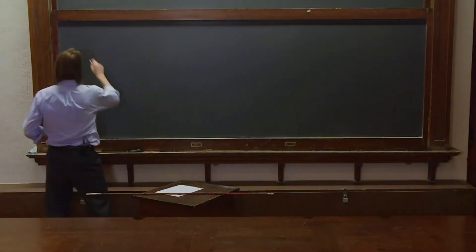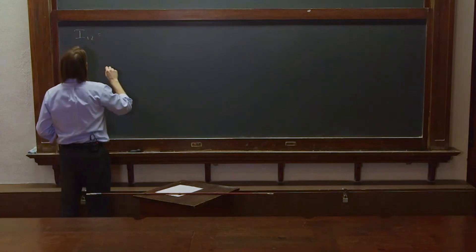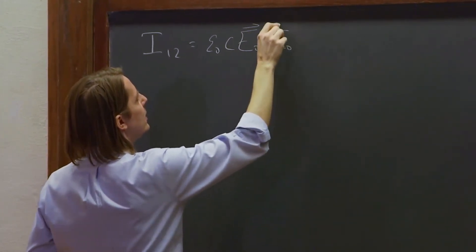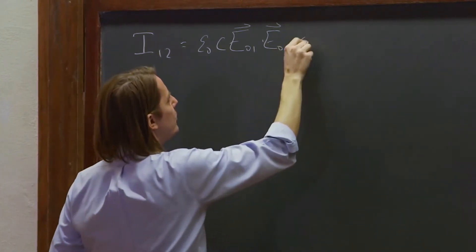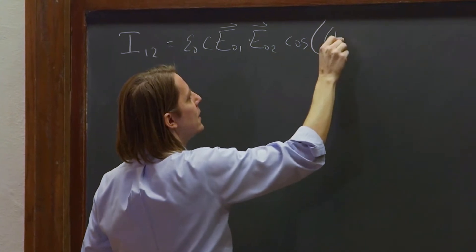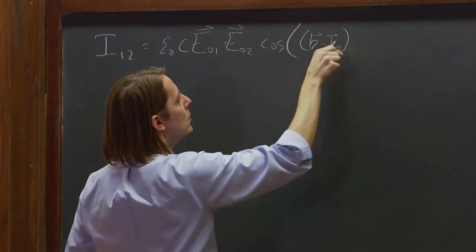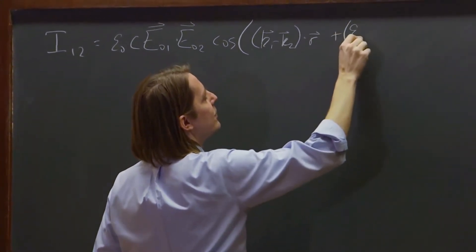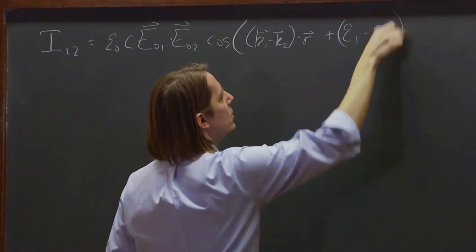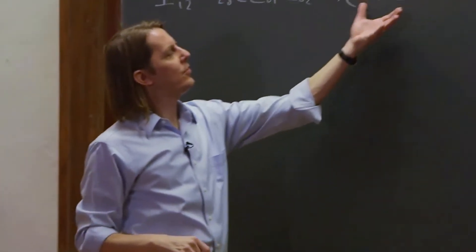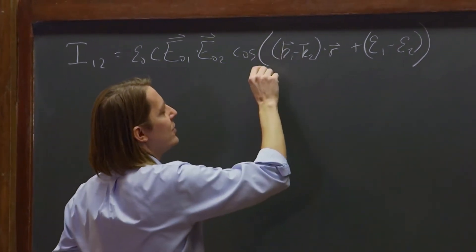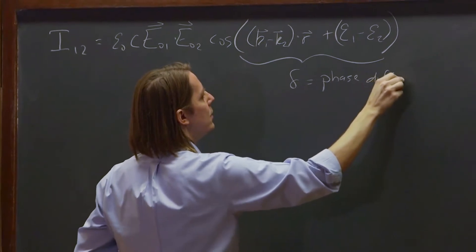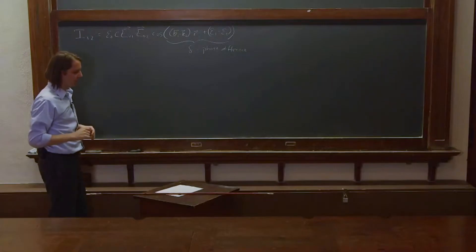We can write our interference term as epsilon naught C times E naught 1 dot E naught 2 — the two amplitudes — times the cosine of (K1 minus K2) dot R, getting the spatial part together, plus the difference in the phases epsilon 1 minus epsilon 2. Together we call that delta: the phase difference between the two interfering plane waves.